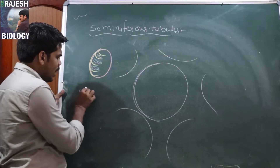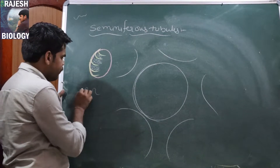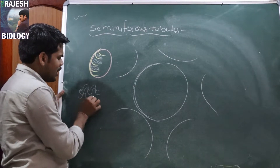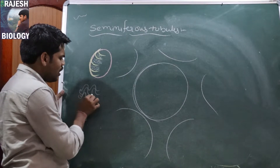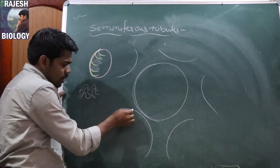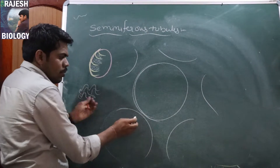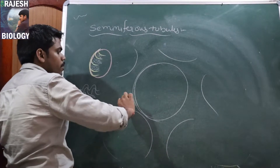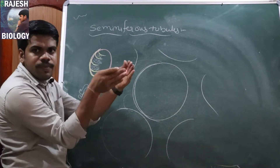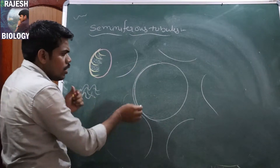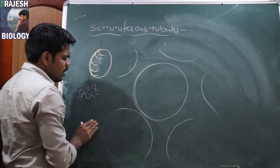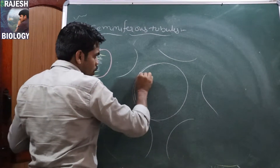Just imagine — the tubule is like this, highly coiled. These 2 to 3 highly coiled tubules are present in each lobule. If we cut, this is one seminiferous tubule — maybe it is the fold of a single seminiferous tubule folded like this. So we can get this type of structure when we cut the seminiferous tubule.